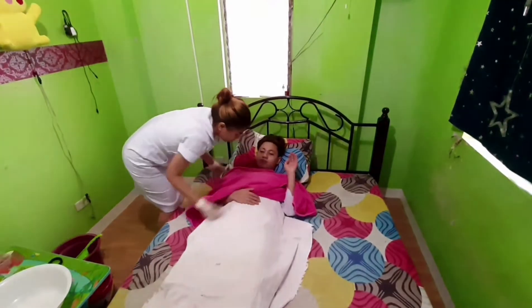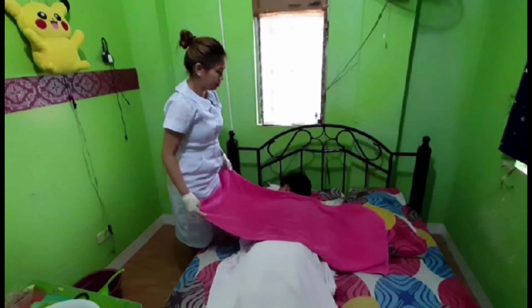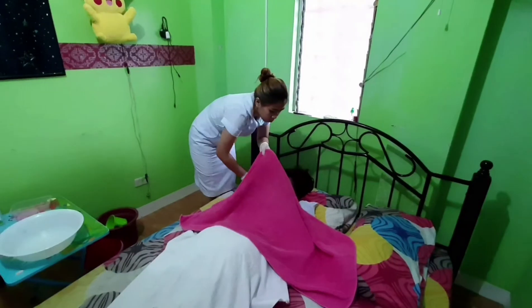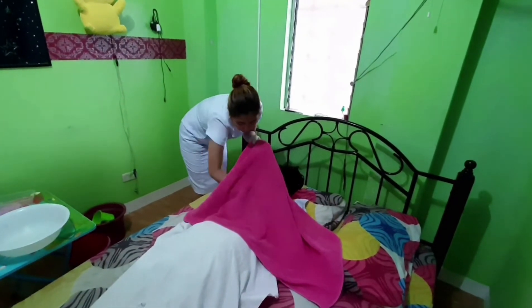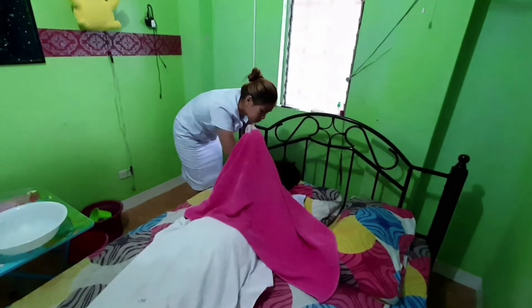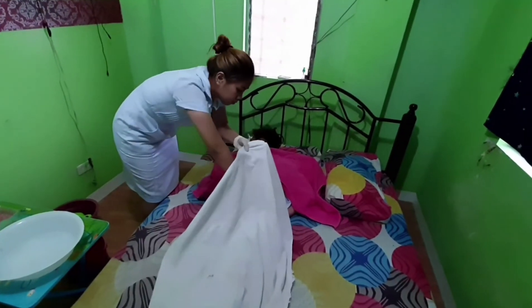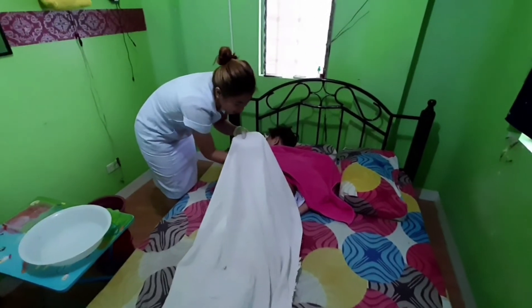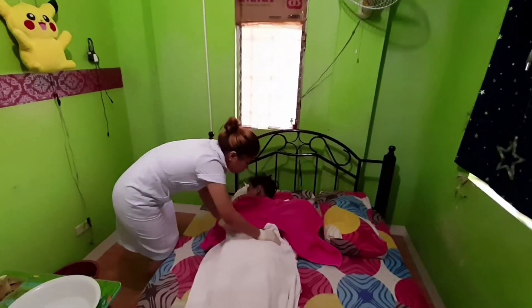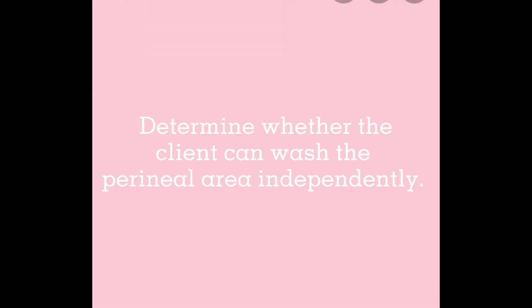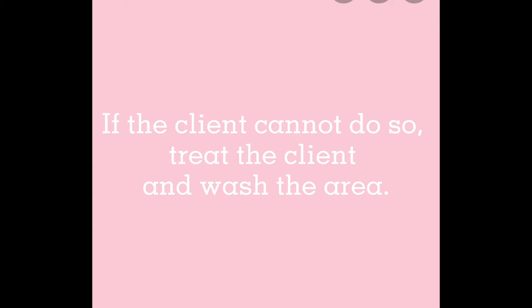Assist the client into the prone position with head turned to the side. Place the bath towel lengthwise alongside the back and buttocks while keeping the client covered with the bath blanket as much as possible. Wash and dry the client's back, moving from the shoulders to the buttocks and upper thighs. Use the S-stroke when cleaning the back. When cleaning the buttocks, use the J-stroke. Pat dry. Assist the client to supine position and determine whether the client can wash the perineal area independently.